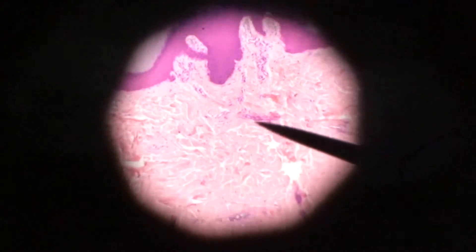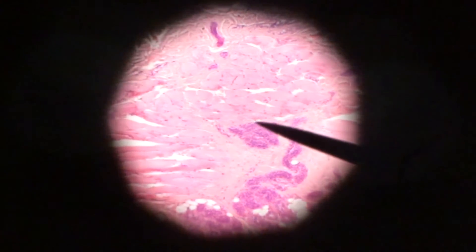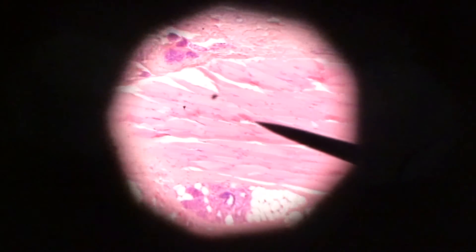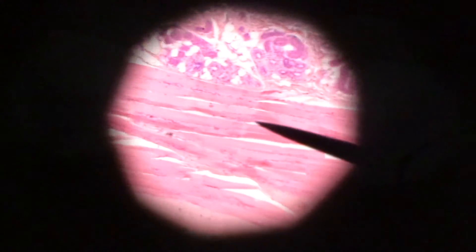All right, so once we have that superficial corpuscle out of the way, next we are going to go deep and try to find a lamellar, also known as Pacinian corpuscle, and this is for deep pressure.